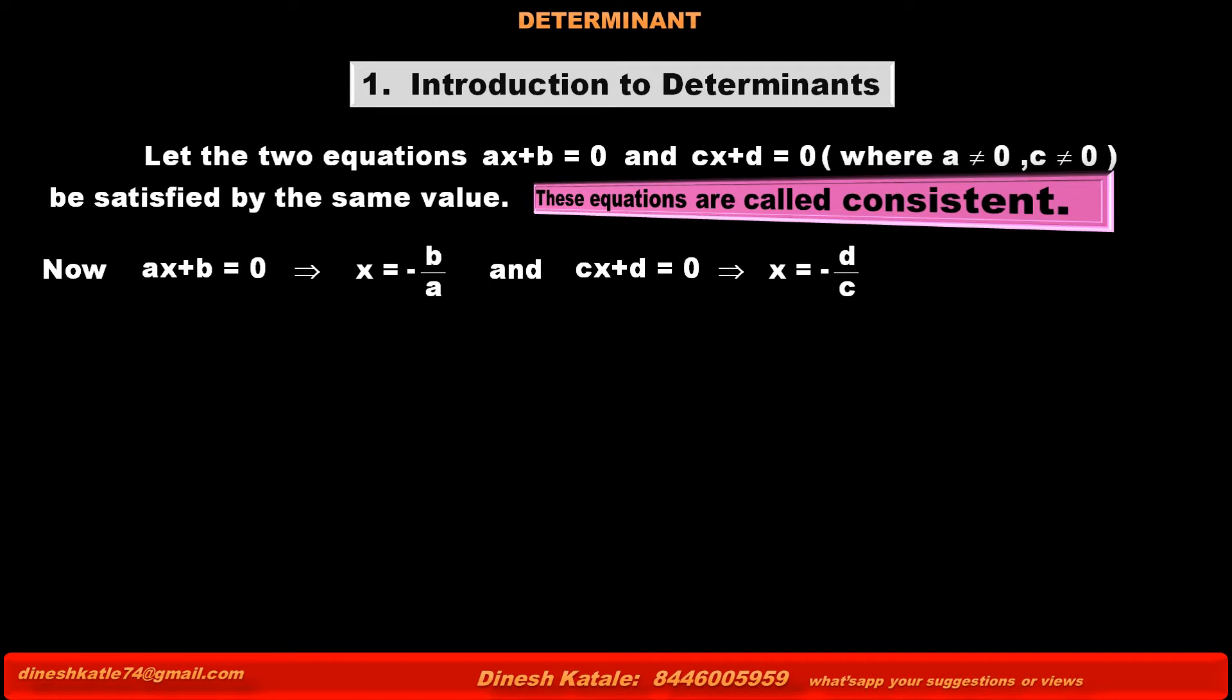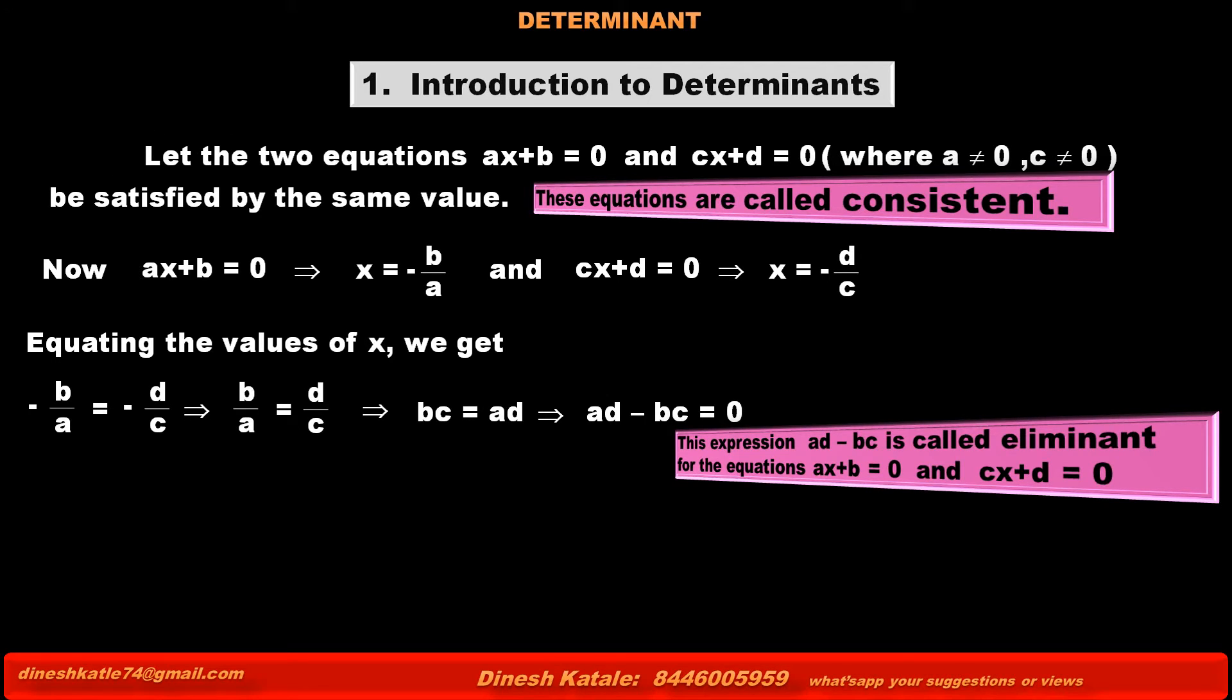from these two equations we got two different values of x. Therefore, equating the values of x, we get -b/a = -d/c. Cancelling minus sign from both sides, we get b/a = d/c. By cross multiplying, we get bc = ad, which implies ad - bc = 0. This expression ad - bc is called eliminant for the equations ax + b = 0 and cx + d = 0.